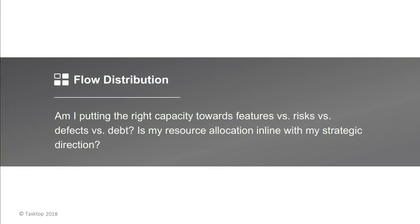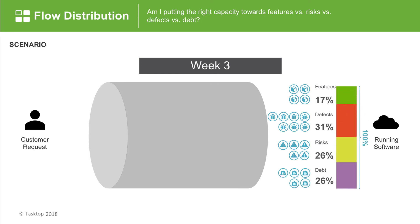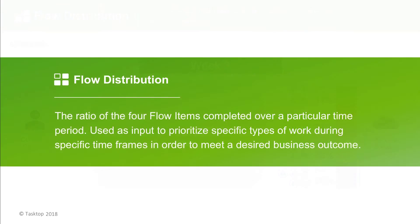Next up and closely related is flow distribution. Consider what you delivered in the last reporting period — is the split between types of flow items in line with your strategic intention? Is it in line with where you are in this product's life cycle? Flow distribution measures whether you are putting the right capacity towards features versus risks versus defects versus debt. It takes your flow velocity and represents the distribution of flow item types out of 100%. You can set a desired flow distribution to make priorities clear and trade-offs evident, and measure your actual distribution at the end of the reporting period.